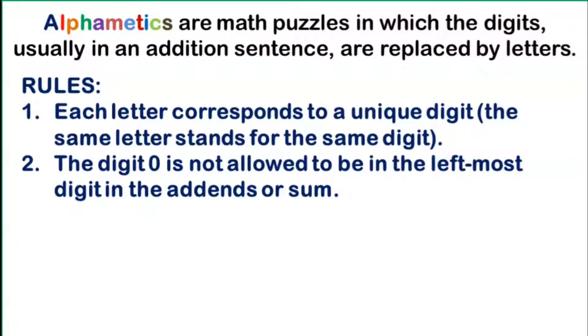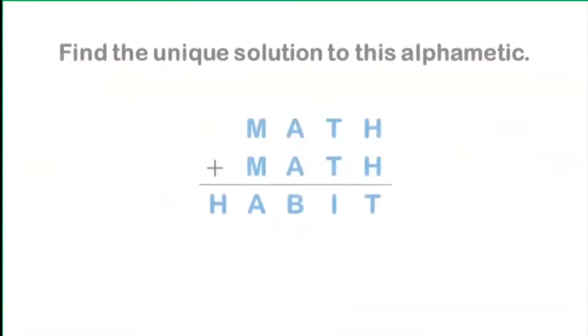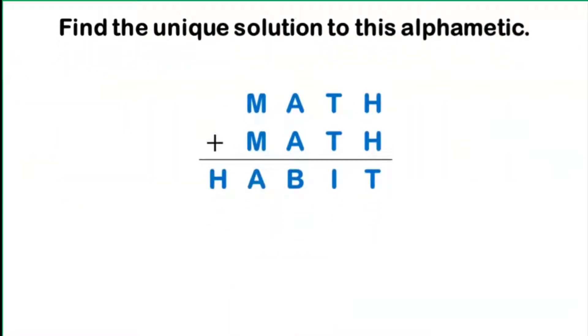One of the famous Alphametics is made by Henry Dudeney, a mathematician specialized in logic puzzles. His Alphametics says send plus more equals money. So for our Math Talino Classroom Random Math problem, find the unique solution to this Alphametic. Math plus math equals habit. Can you do it in 60 seconds? You give it a try and comment down your answer before I show the unique solution.